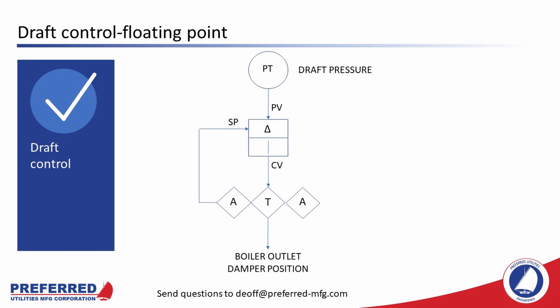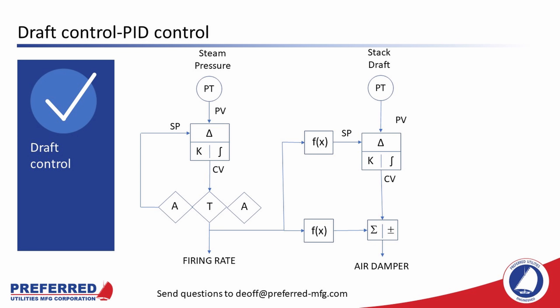The simplest type of draft control is known as floating point control. It utilizes a draft transmitter at the boiler outlet at the bottom of the stack, but above or downstream of the stack outlet damper. There is one set point for all firing rates — usually just slightly negative — and the outlet damper is positioned to maintain the draft set point. Control is proportional only with a dead band where no corrective action is taken if draft is close to set point, reducing boiler outlet damper hunting. Essentially with floating point draft control, close is good enough.